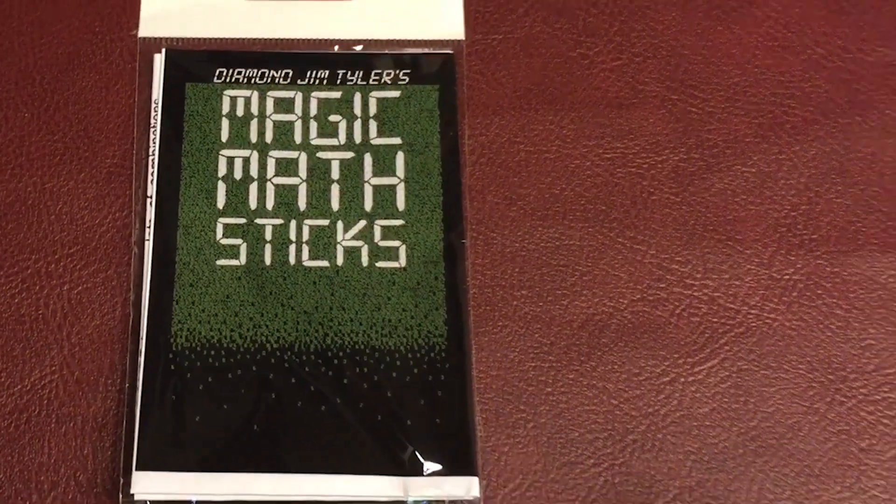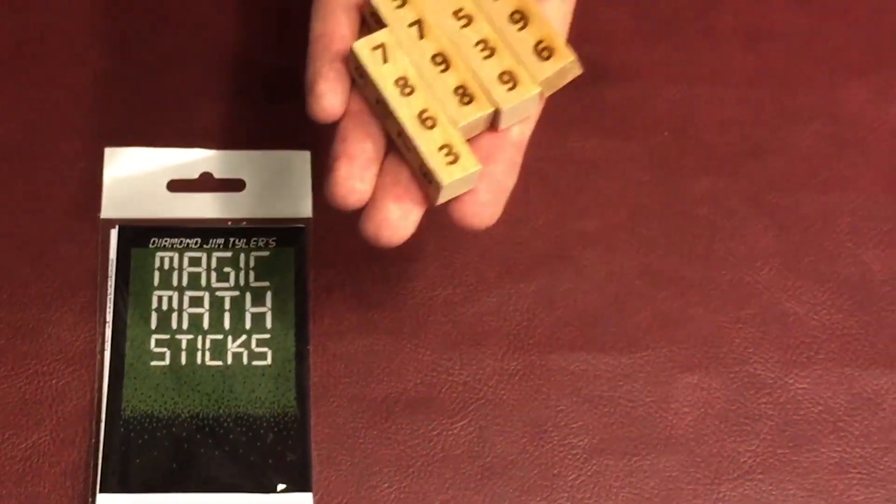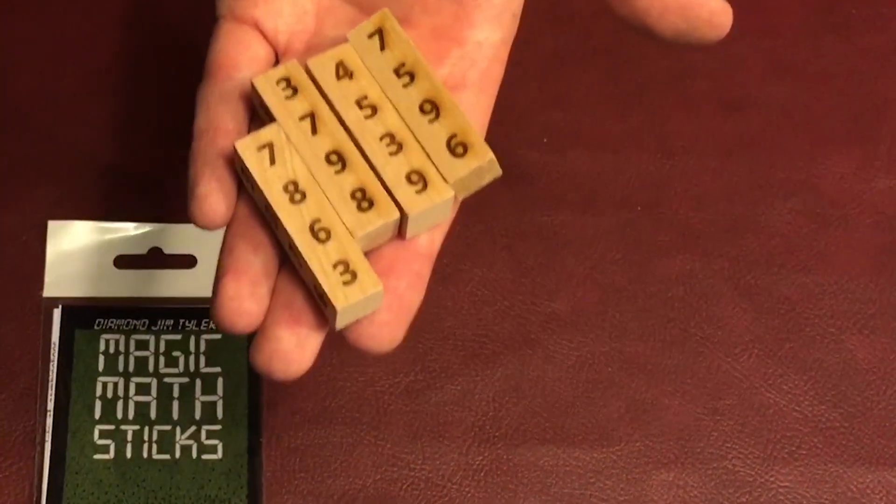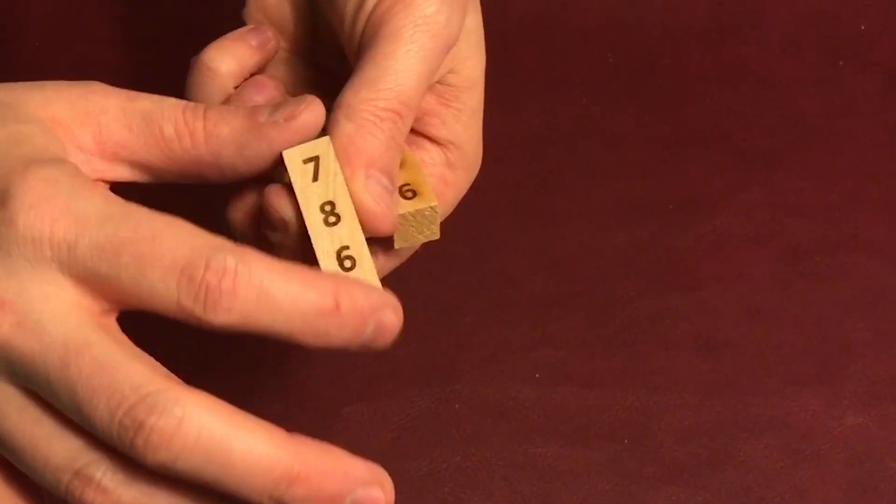This is the Magic Math Sticks. What you're getting here are four wooden sticks and each of the numbers has been embossed.